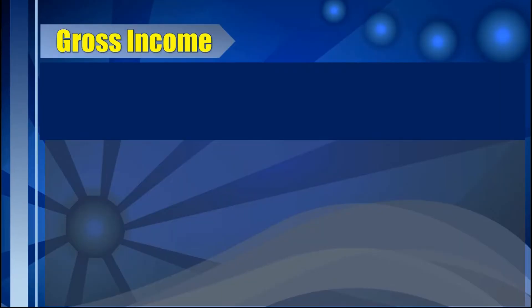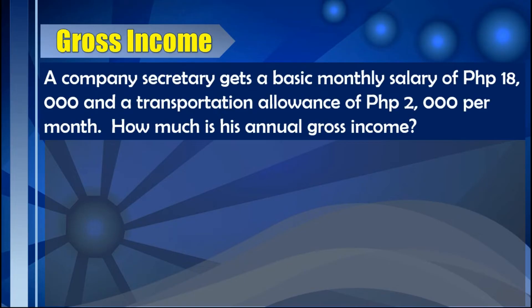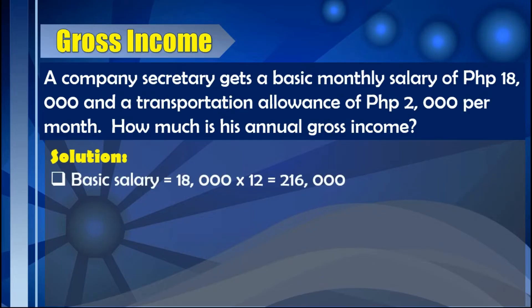Let us now have an example problem for gross income. A company secretary gets a basic salary of P18,000 and a transportation allowance of P2,000 per month. How much is his annual gross income? Since we are looking for the annual gross income — meaning for one year — we first compute the basic salary for one year by multiplying P18,000 by 12 months, which gives us P216,000.